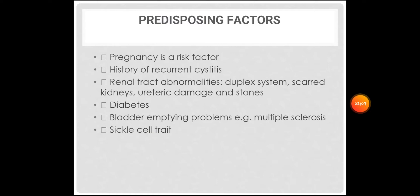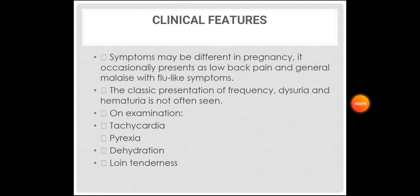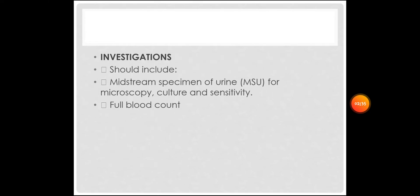Symptoms may be different in pregnancy; it occasionally presents as lower back pain and general malaise with flu-like symptoms. The classic presentation of frequency, dysuria, and hematuria is not often seen. On examination there will be tachycardia, pyrexia, dehydration, and loin tenderness. Investigations should include a midstream specimen of urine for microscopy, culture and sensitivity, and a full blood count.